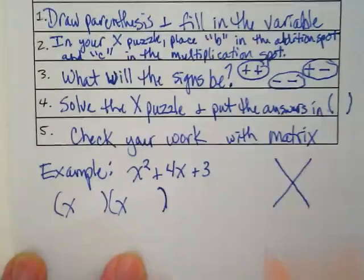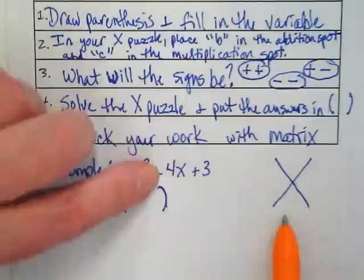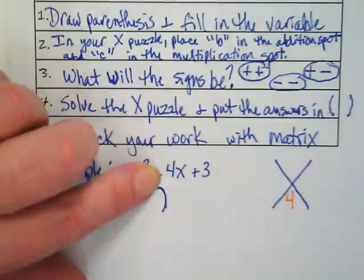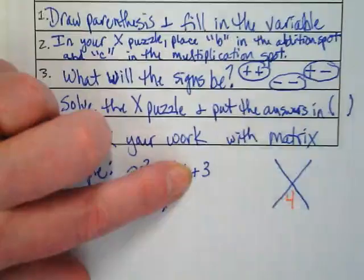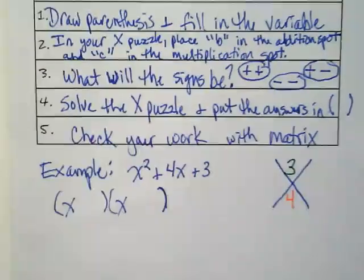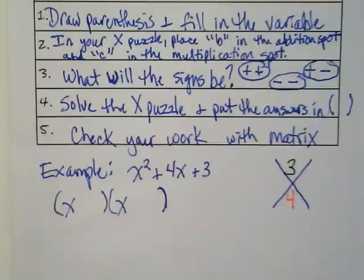I'm going to use my color coding from up above. And what goes in here is in place for the b, which is a four. And what goes up above is in place of the c, and that's three.